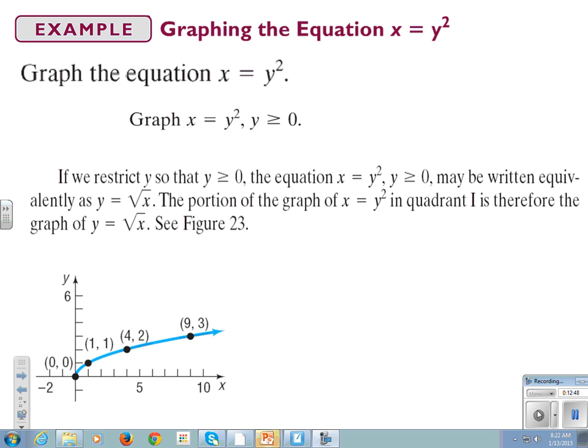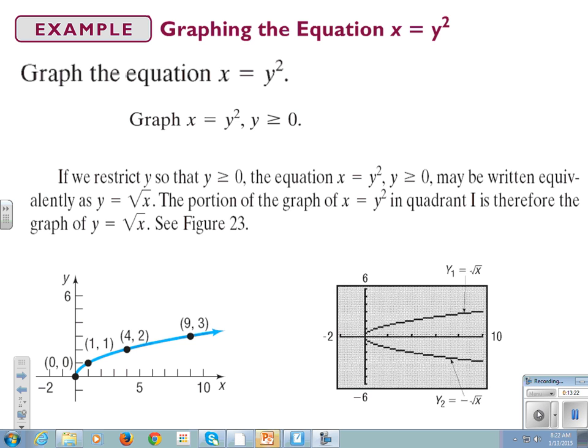Now we're going to graph the equation x equals y squared on a graphing calculator. You can only graph y equals functions. So if I were to graph this on my graphing calculator, I would have to graph y equals the square root of x to get the top half of the graph, and y equals negative square root of x to get the bottom half. Because graphing calculators only do y equals. Desmos, on the other hand, will graph this like a trooper.